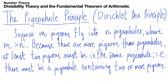So what is the main idea here? Suppose we have m pigeons that fly into n pigeonholes where they are going to roost, where m — the number of pigeons — is greater than the number of pigeonholes n. Because there are more pigeons than pigeonholes, at least two pigeons must be in the same pigeonhole. In other words, there must be a pigeonhole containing two or more pigeons.